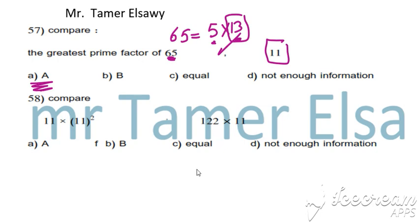Compare 11 times 11 squared with 122 multiplied by 11. We can't multiply these big numbers. Cancel 11.